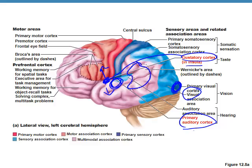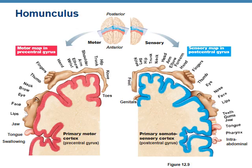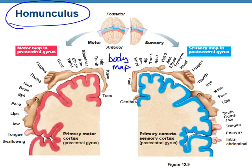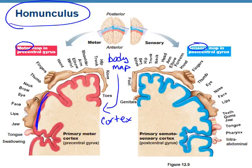This figure is called a homunculus. What it does is create a body map for both the motor and the sensory areas and how they relate specifically to the cerebral cortex. For example, this entire section of the cerebral cortex is dedicated to causing motor action to occur somewhere in the face.